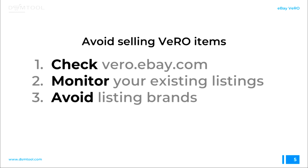Let's talk about how to avoid selling VERO products. Full disclosure: we have solutions in DSM Tool for each of these points, but if you're doing drop shipping manually, here's what to do. First, check vero.ebay.com when you publish a new item — take the brand name and check if it's on the list. More than that, since the list changes from time to time, it's important to monitor your existing listings periodically, maybe once a month — take a sample of five or six items and check their brand names.